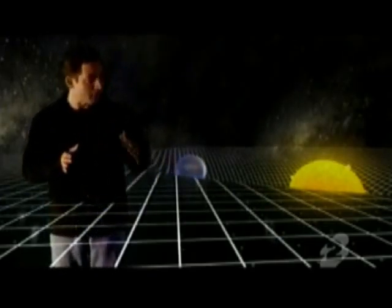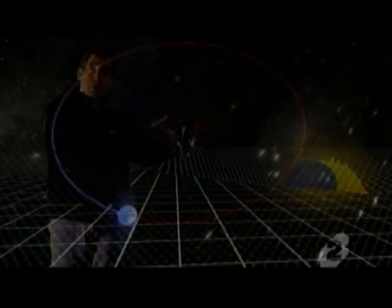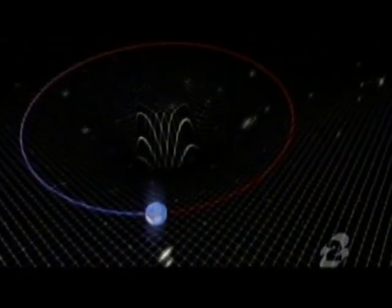A planet like the Earth is kept in orbit not because the Sun reaches out and instantaneously grabs hold of it, as Newton's theory suggested, but simply because it follows curves in the spatial fabric caused by the Sun's presence.